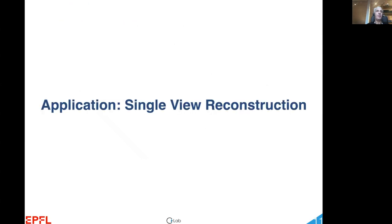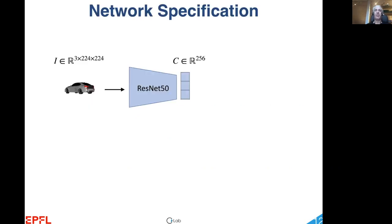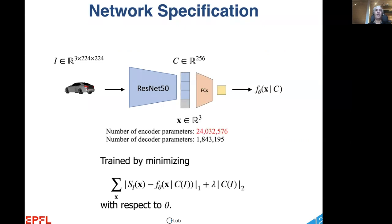I would now like to show how this works in practice on two different applications. First, single view reconstruction and then shape optimization. Given a set of 3D shapes, such as those from the ShapeNet or Pix3D datasets, we can train a ResNet50 to extract codes from rendered images of these shapes.